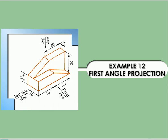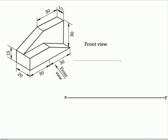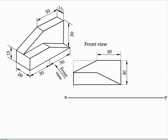Example problem. First angle projection. In this problem, we have to draw the front view, top view and left side view as per first angle projection. Draw the front view above the XY line. Draw the projectors vertically downward and complete the top view below the XY line.